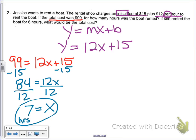The second one asks, if she rented the boat for 6 hours, meaning we know how many hours we took it out, what is the total cost? Remember, we just talked about it. 6 hours is what x is going to be this time. So y equals 12 times 6 plus 15.